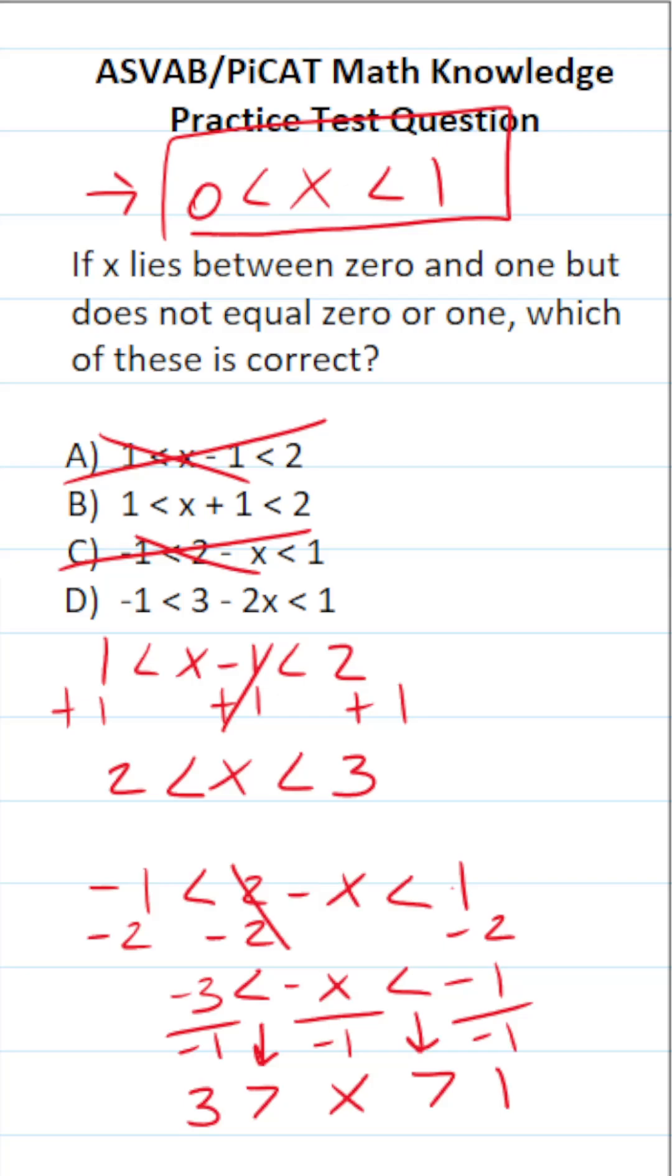Let's go ahead and take a look at B. We have 1 less than x plus 1, which is less than 2. To solve this one, we're going to subtract 1 from both sides. In doing so, this crosses out, leaving you with x in the middle. 1 minus 1 is 0. 2 minus 1 is 1. This does, in fact, match our solution.